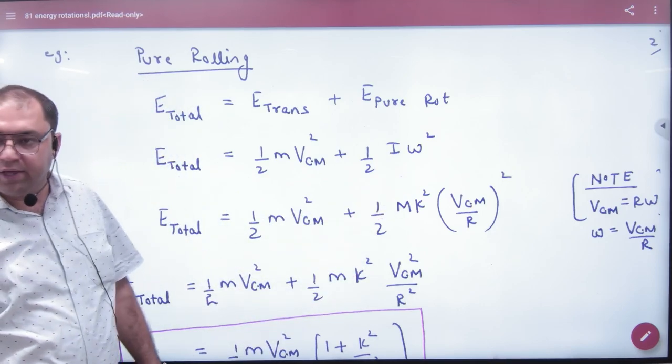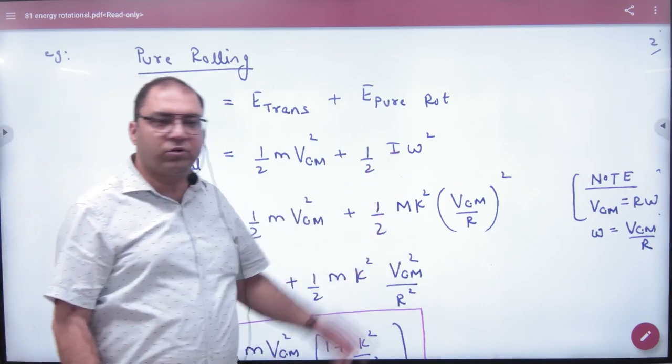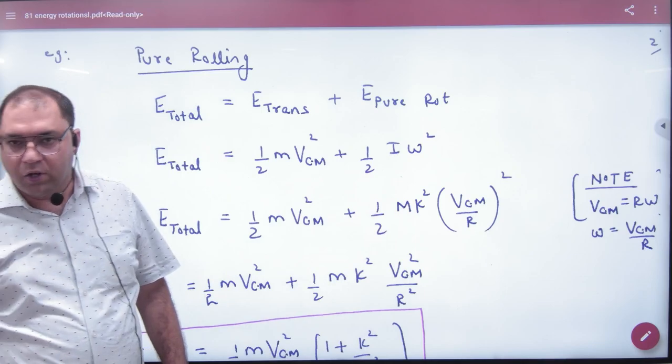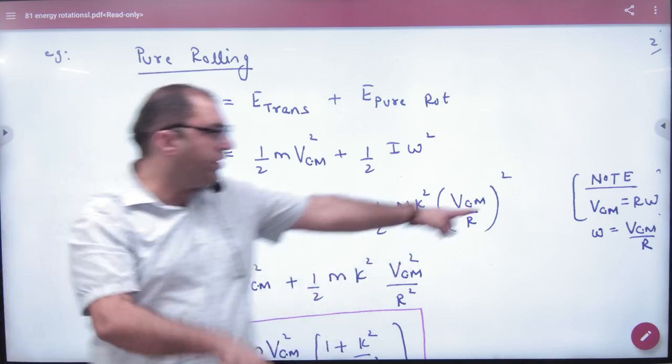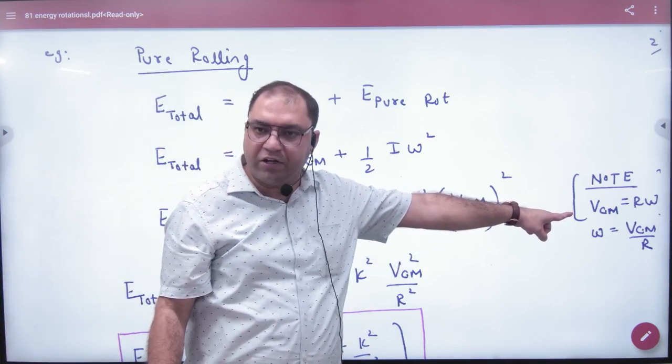So in general, I is mk squared. And when a body is in pure rolling, we apply this formula: v center of mass equals r omega.